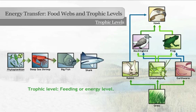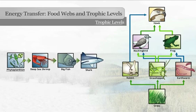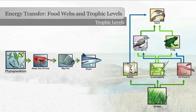Trophic levels classify feeding relationships according to energy transfer. Trophic levels start with producers at trophic level 1, or T1. Then each arrow indicates a higher trophic level.